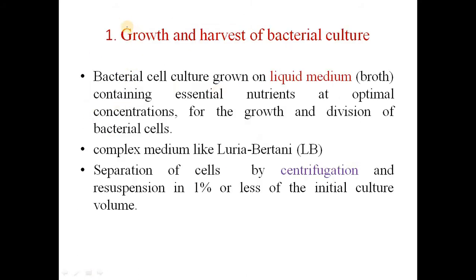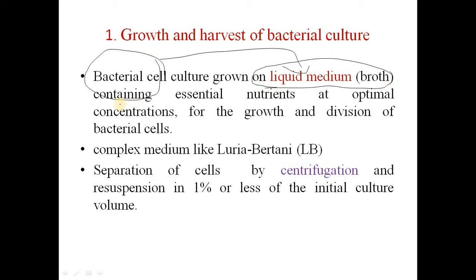The first step is to grow the bacteria in a specific medium, because bacteria are the sources of our DNA or the plasmid DNA. Their growth is on a liquid medium, or we can say a broth, which is a medium with essential nutrients. We grow this bacterial cell at optimum concentration, which is necessary for growth as well as division of the bacterial cell. Afterwards, cells are separated from the LB medium by centrifugation, because high-speed centrifugation separates specific components depending upon their size.